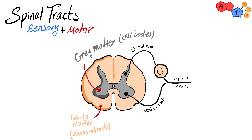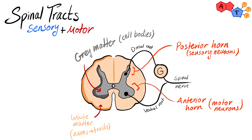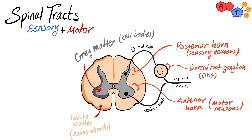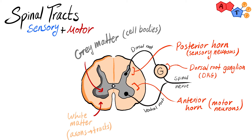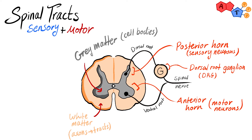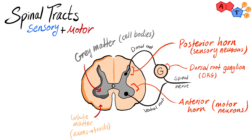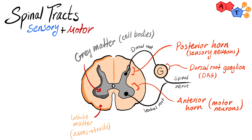During this video we'll be focusing more on the white matter since we'll be discussing the tracts. Gray matter is divided mainly into anterior horn and posterior horn. The anterior horn has cell bodies or nuclei of motor neurons, whereas the posterior horn has the cell bodies of sensory neurons. The posterior horn is connected to the dorsal root ganglia system — the ganglion is a cell body present outside the central nervous system.